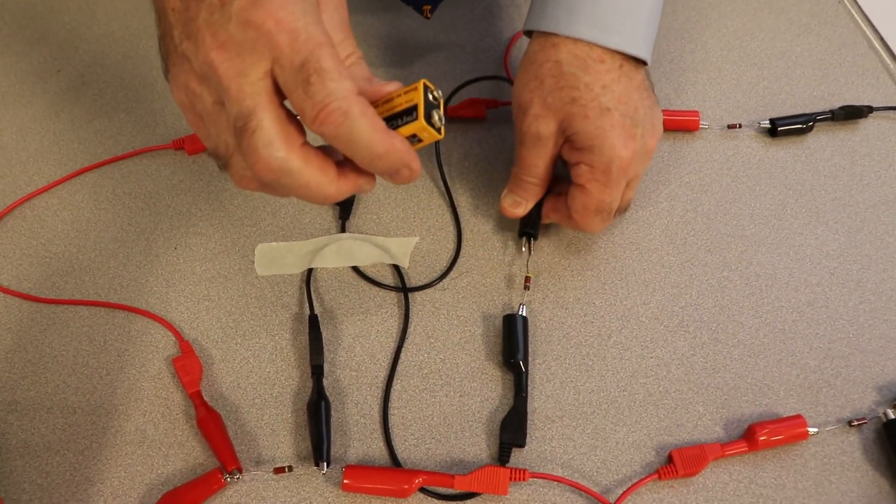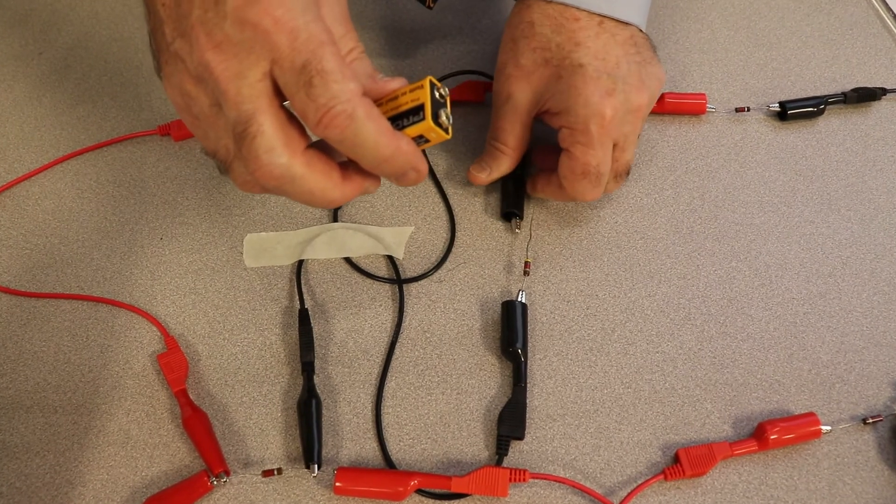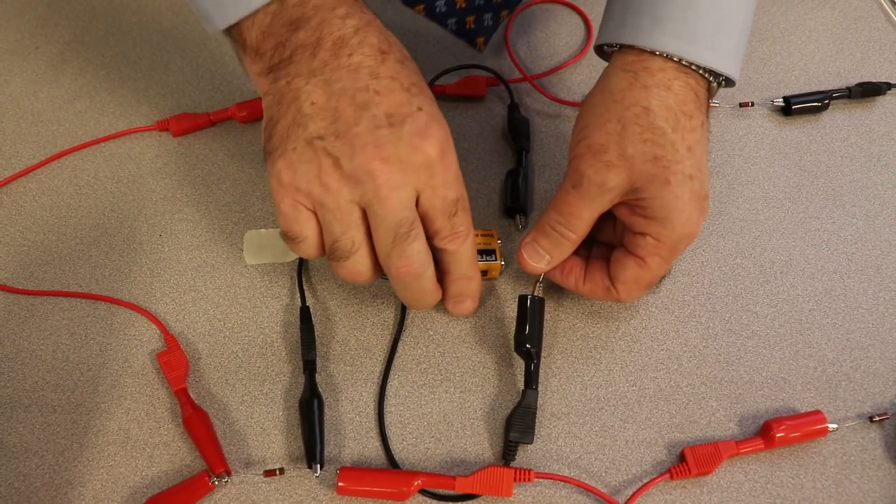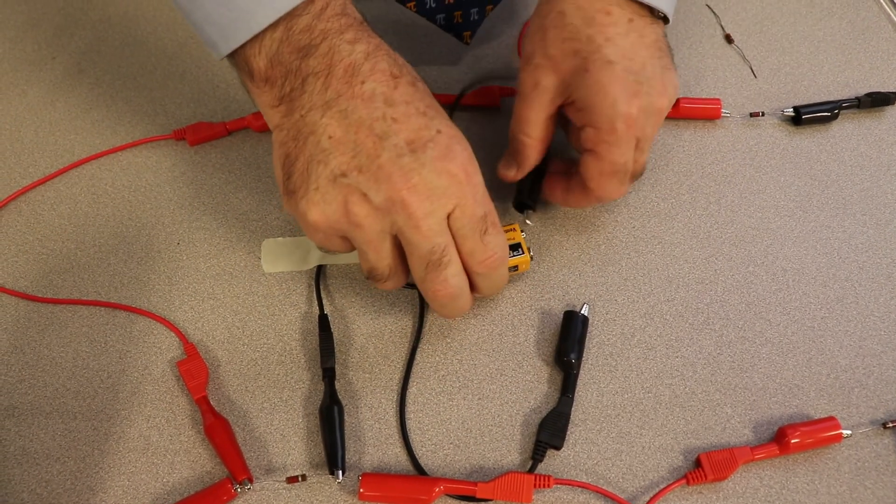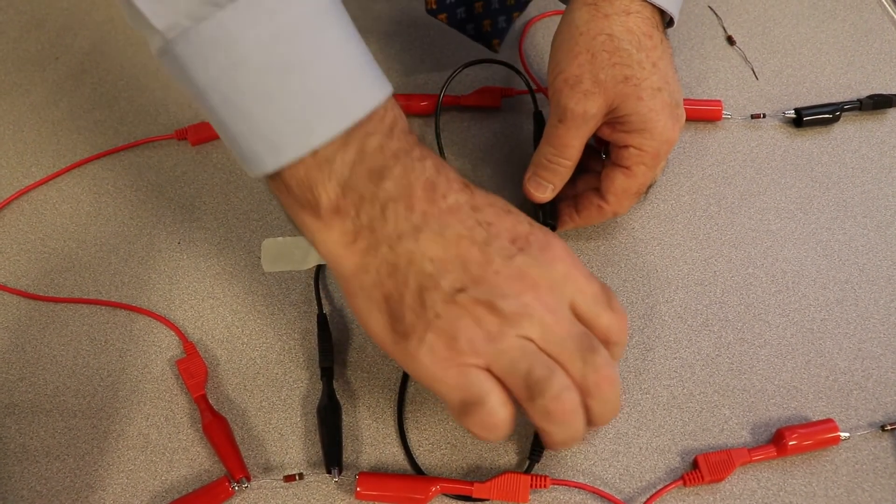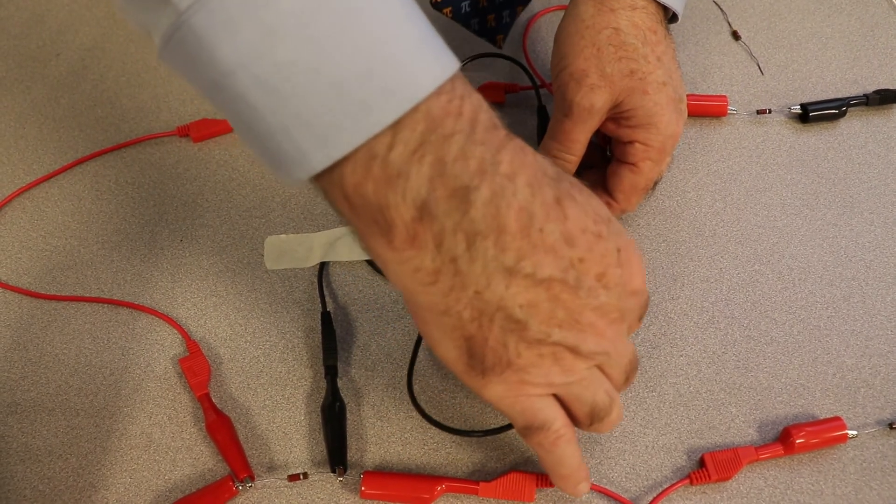So I'm taking resistor 5 out of the circuit, and now I'm going to hook up battery 9 volts. And don't forget to measure the voltage of the battery.